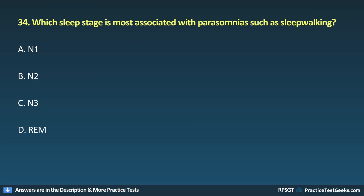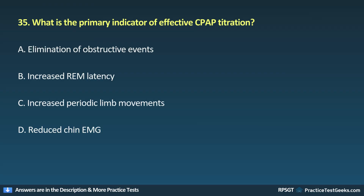Question 35: What is the primary indicator of effective CPAP titration? A. Elimination of obstructive events, B. Increased REM latency, C. Increased periodic limb movements, D. Reduced chin EMG.